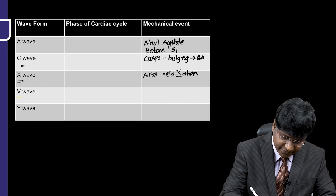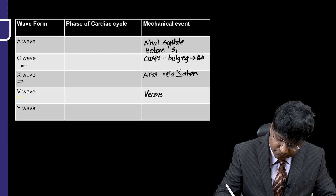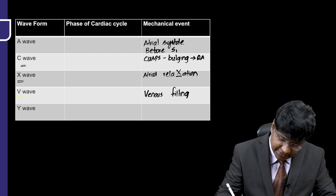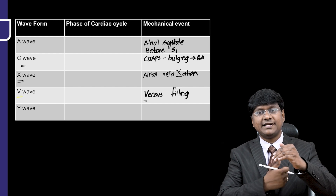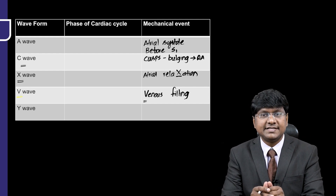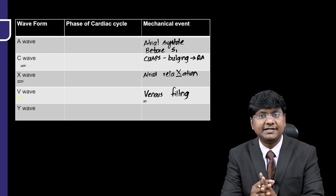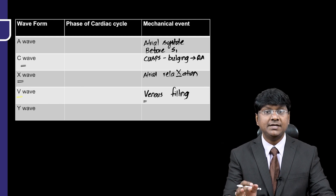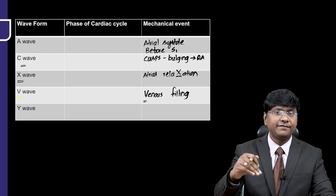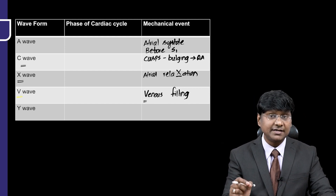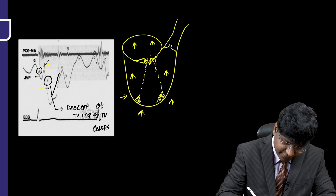Followed by that is the V wave, which is again a positive wave due to venous filling. The right atrium receives blood from the superior vena cava and inferior vena cava. As the right atrium receives this blood, right atrial pressure increases, giving you the V wave. The V wave reflects the rise in right atrial pressure due to venous filling, and it appears after the X wave.